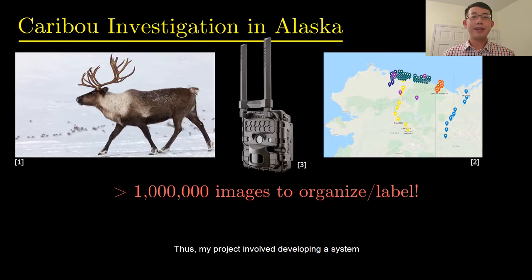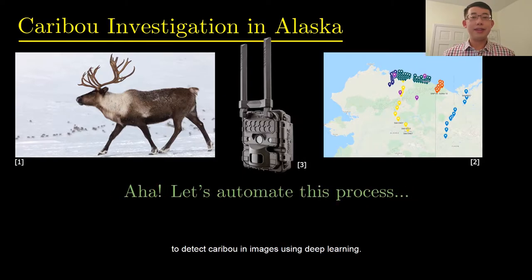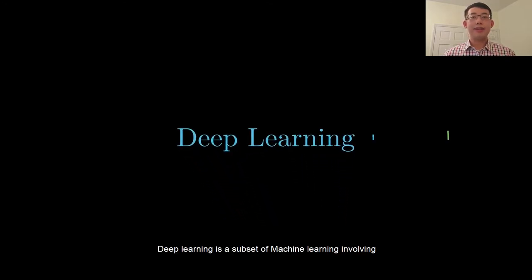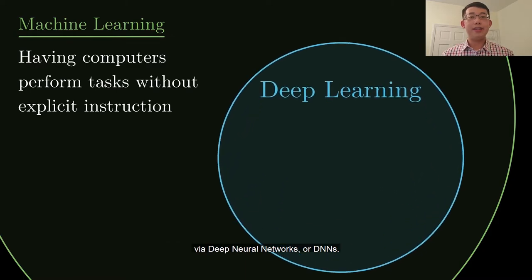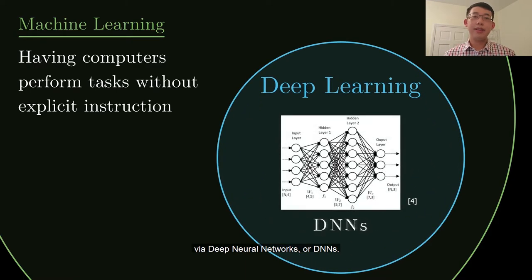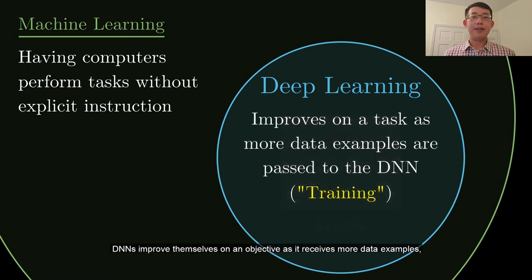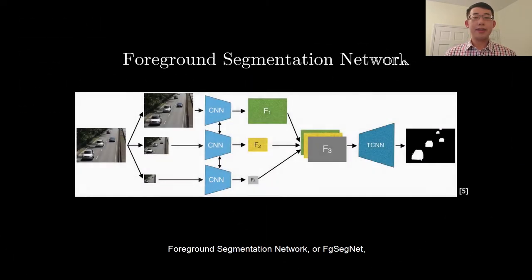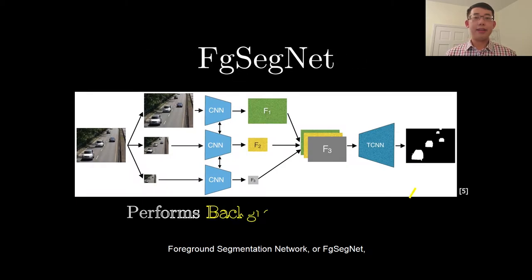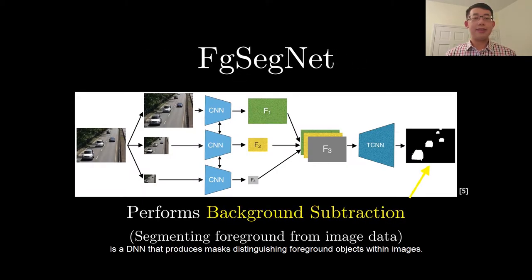Thus, my project involved developing a system to detect caribou images using deep learning. Deep learning is a subset of machine learning involving computers to learn a task without explicit instruction via deep neural networks, or DNNs. DNNs improve themselves on an objective as they receive more data examples, a process called training. Foreground segmentation network, or FG-Segnet, is a DNN that produces masks distinguishing foreground objects within images.